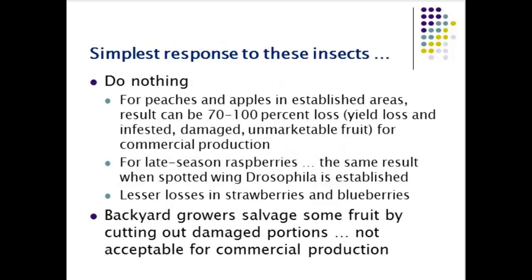For peaches and apples in established orchards or areas where there are mature trees around, you can see seventy to even a hundred percent loss of yield and quality — meaning unmarketable fruit in commercial production. The same may be true for late-season raspberries when spotted wing drosophila becomes established. Losses are typically much less in strawberries and blueberries. For backyard growers, you can salvage a lot of fruit that wouldn't be salvageable in commercial production — you don't need to do everything that someone does when selling to market.